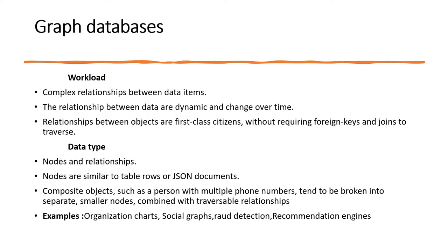In a graph database, nodes represent entities similar to rows or JSON documents, and relationships connect them. A good example is an organizational chart — one person reporting to another, where a reportee is reported to by multiple employees belonging to different hierarchies. Such complex hierarchical relationships can be stored effectively in graph databases.